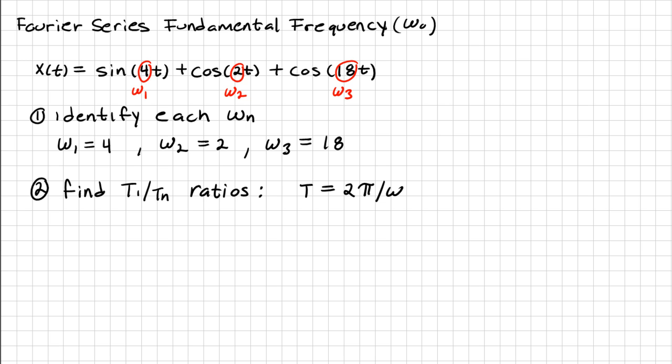So we have to find each of the ratios T₁ over Tₙ. So my T₁ is going to be equal to 2π over ω₁, which is 2π over 4. So my T₂ is 2π over 2.